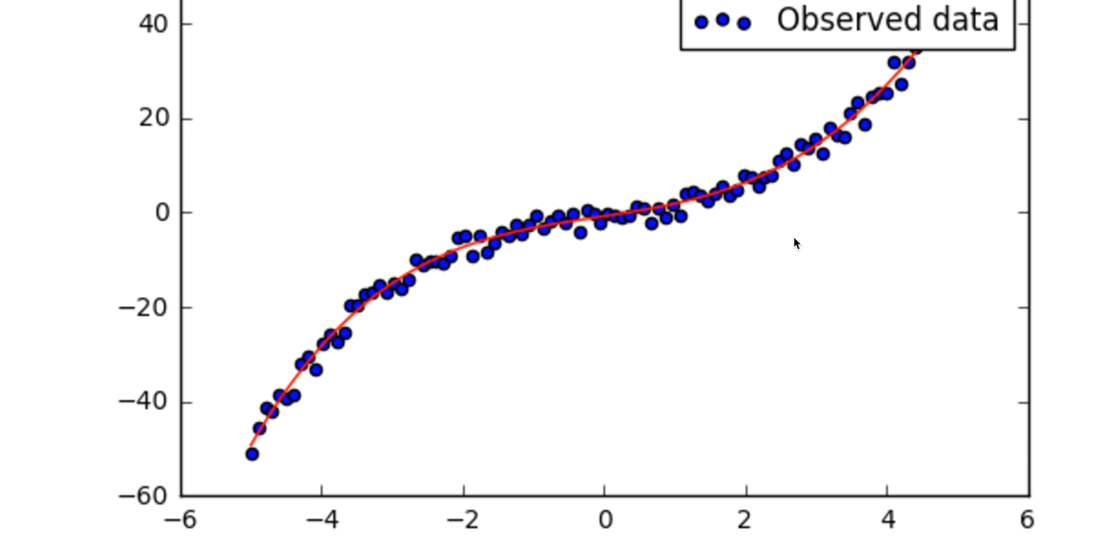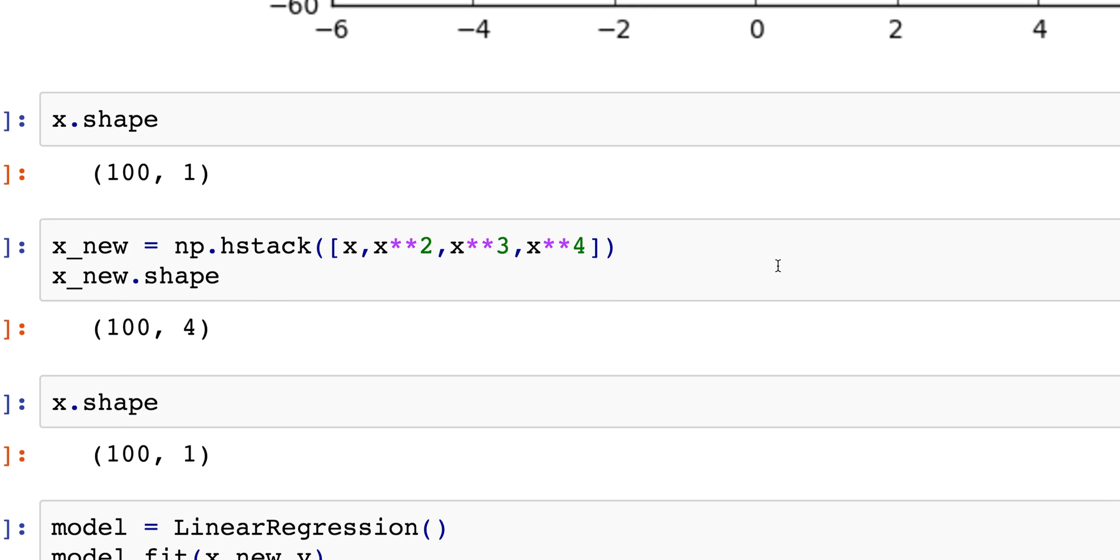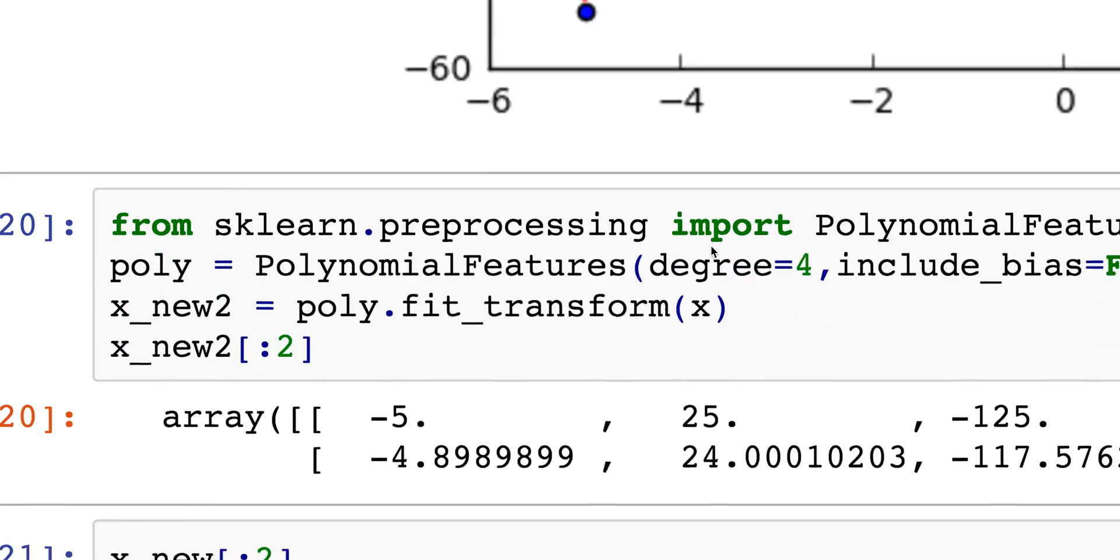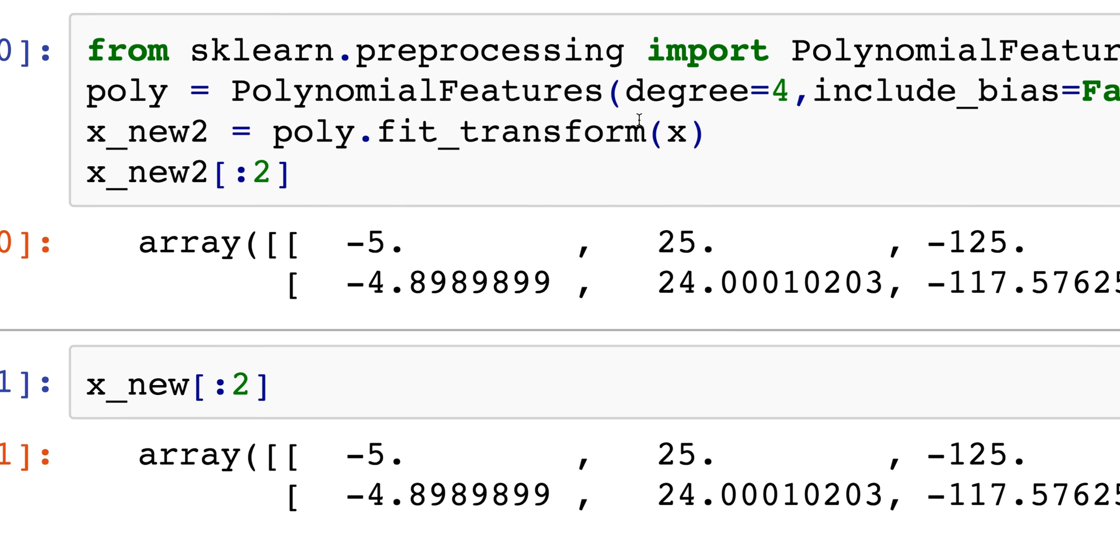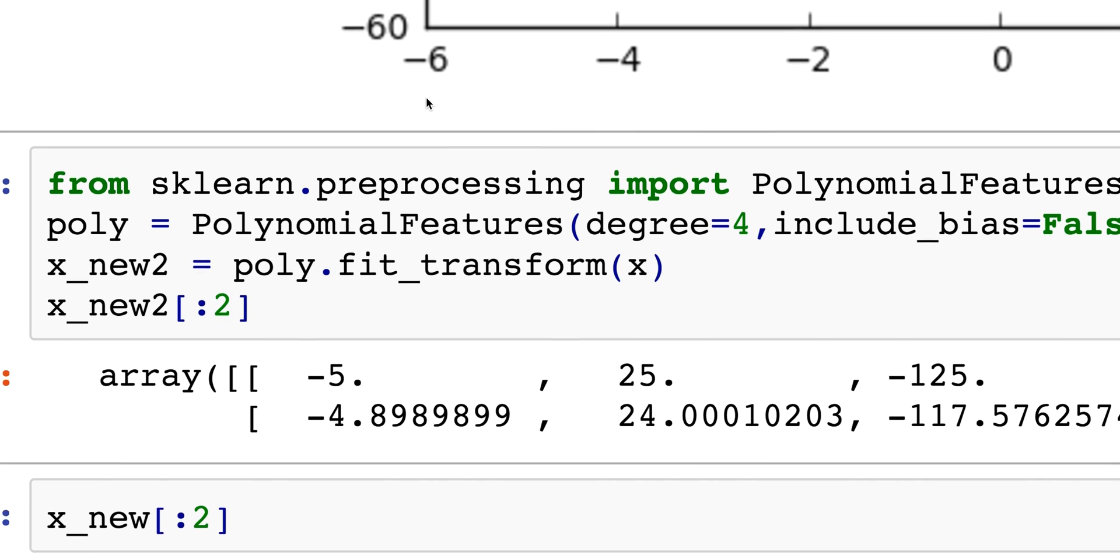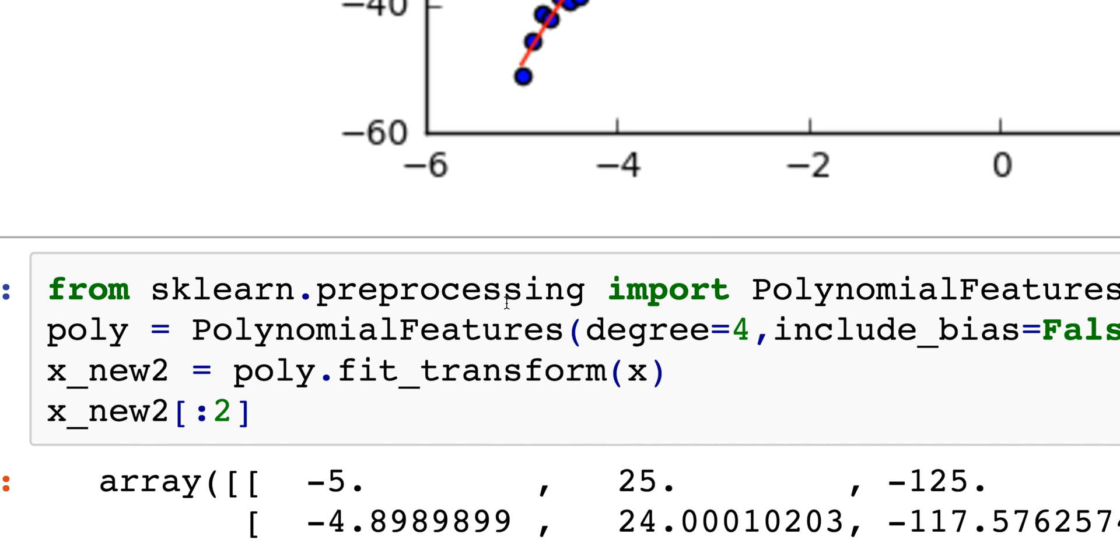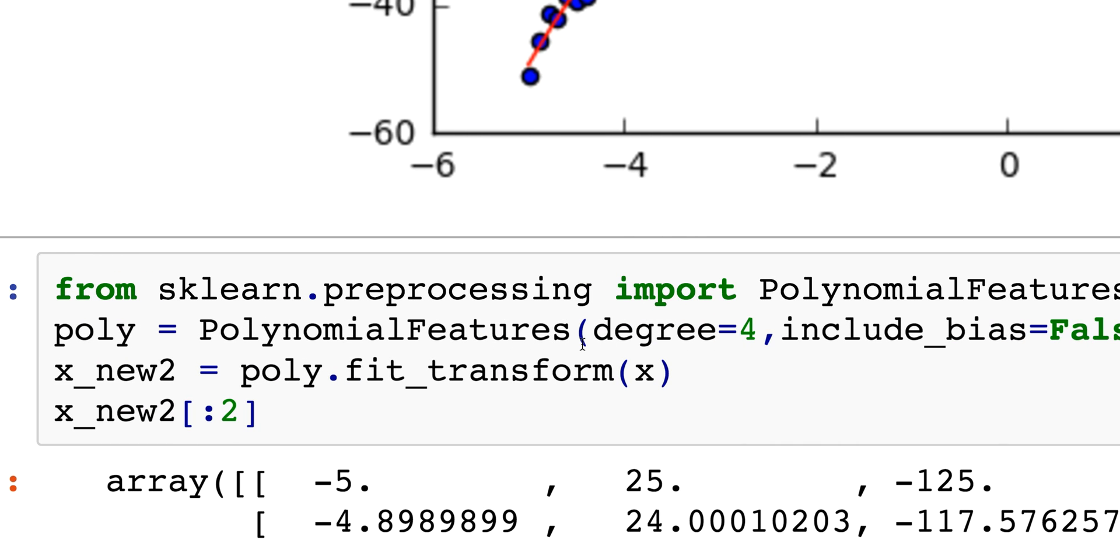Now if you go back over here, it's gonna be a bit tedious for me to keep typing in x, x squared, x cubed, x to the 4, so scikit-learn has got this pretty nifty little feature called polynomial features. What it does is it's gonna transform this x into what I did before, so I don't have to manually do it. All you have to do is from sklearn.preprocessing import PolynomialFeatures.